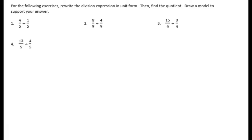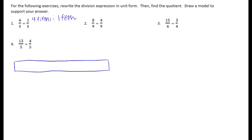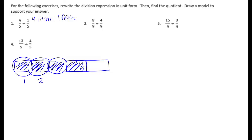Number 1: 4 fifths divided by 1 fifth. In unit form, that's 4 fifths divided by 1 fifth. If we draw a model, we have 4 fifths and we're going to separate it into groups of 1 fifth: 1 one-fifth, 2 one-fifths, 3 one-fifths, and 4 one-fifths. So this is equal to 4.